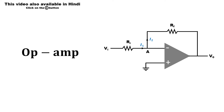In this video, we will solve 11 different types of numerical problems based on operational amplifiers. Normally an operational amplifier has different formulas for inverting, non-inverting, summing, subtractor, differentiator, and integrator, which is confusing to remember. Here we will solve all these types of operational amplifier problems with the help of Kirchhoff's node analysis without remembering any formula.